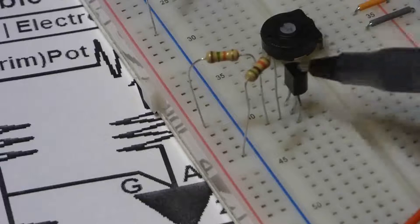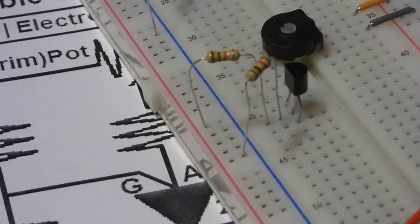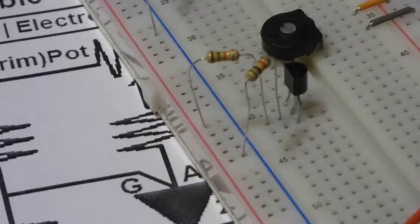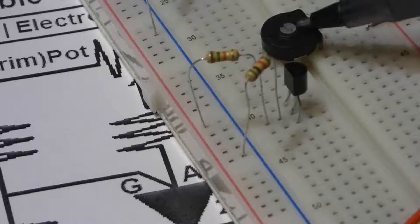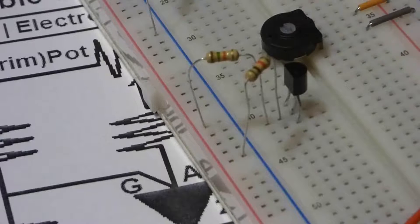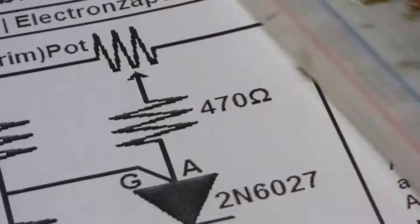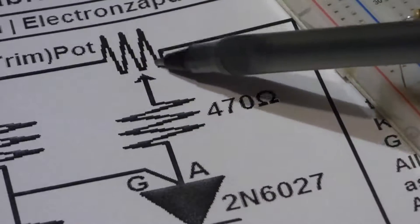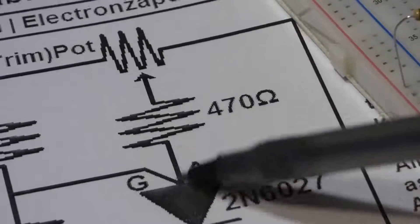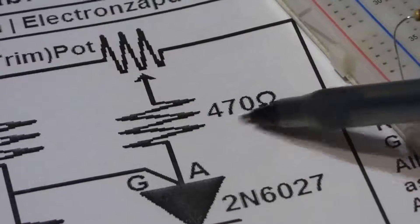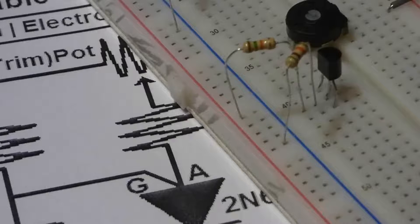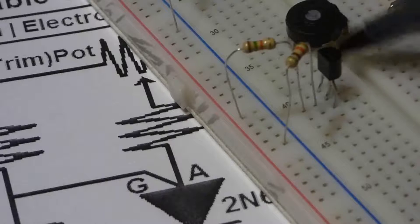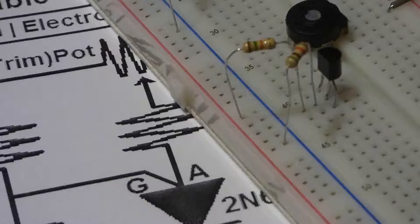So now I have a potentiometer up here—a trim pot, actually—and I'm going to use that to set the voltage to the anode. And I'm going to put a protective resistor between them, 470 ohms, to make sure that I never have too much current coming through the anode.